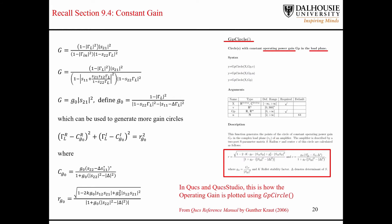In QUCS and in QUCS Studio, there's a function called GP circle, and you can see here on the right-hand side, this is from the QUCS reference manual, the function GP circle plots constant operating power gain circles in the load plane. You can see the equations that are referenced here in the manual match the equations that we have here.